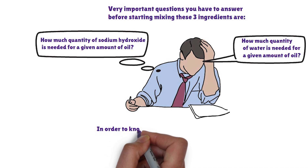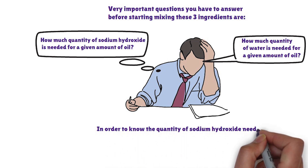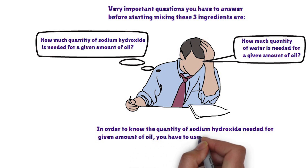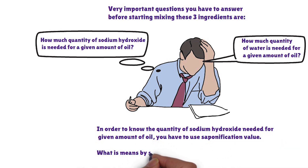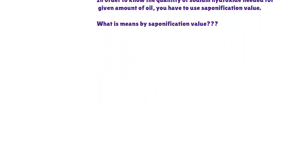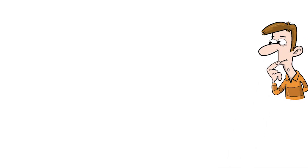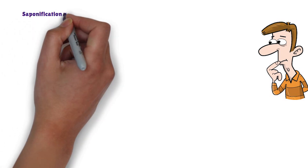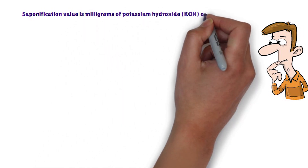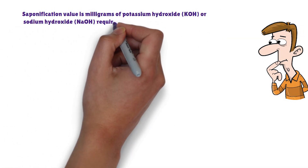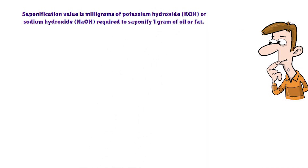Answer for question number one. In order to know the quantity of sodium hydroxide needed for a given amount of oil, you have to use the saponification value. Saponification value is the milligrams of potassium hydroxide or sodium hydroxide required to saponify one gram of oil.